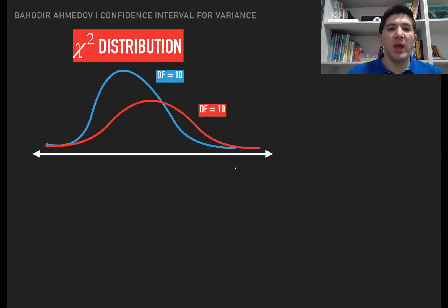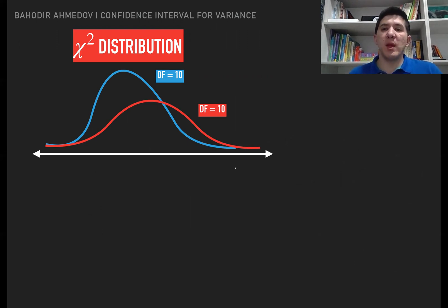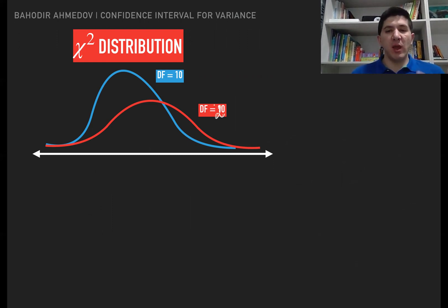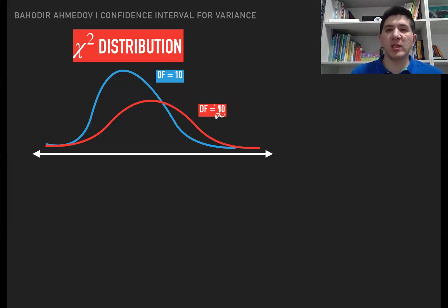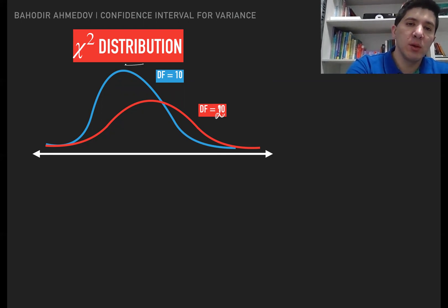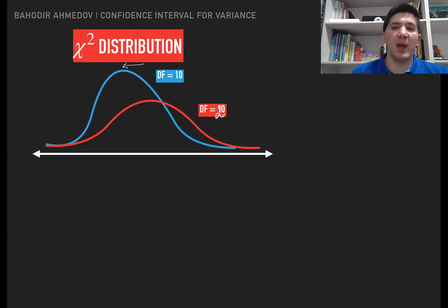For example, if the degrees of freedom is smaller — say 10 — the distribution is going to be a little bit skewed to the left. When the degrees of freedom is higher, for example 20, the shape of the chi-square distribution is going to look more like a normal distribution. So as degrees of freedom decrease, it skews left; as they increase, it becomes closer to normal.